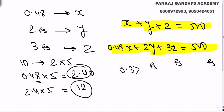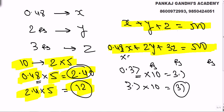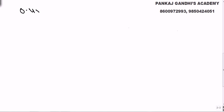Had it been 0.37, an odd number, 2 is not a factor, so we would need to multiply by 10 twice, giving 100. But since 0.48 is even, 2 is already there, so we only need 5 twice — that is, multiply by 25. Therefore x, the number of 0.48-rupee stamps, must be a multiple of 25. We have: 0.48x + 2y + 3z = 500.